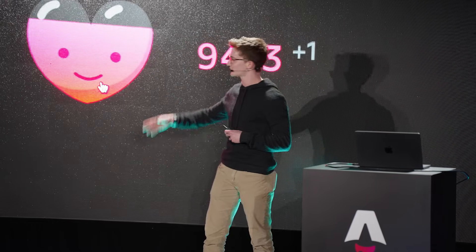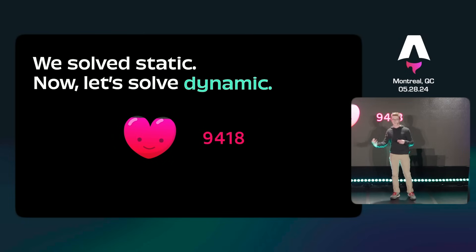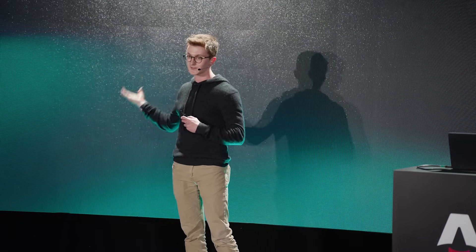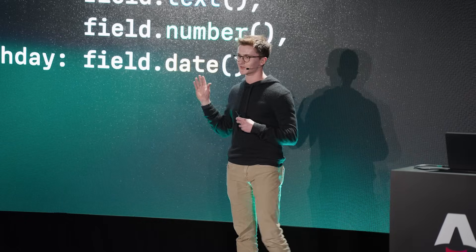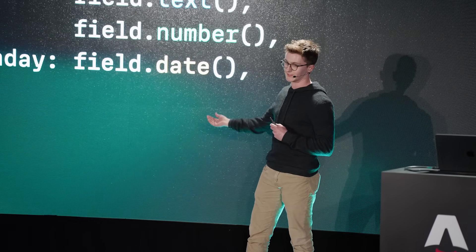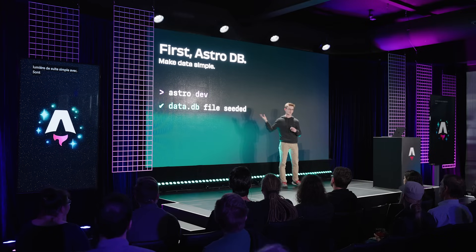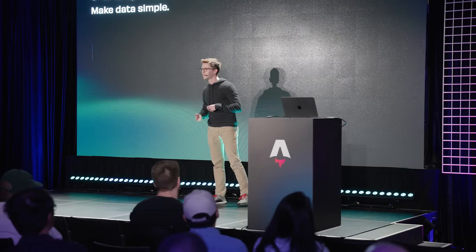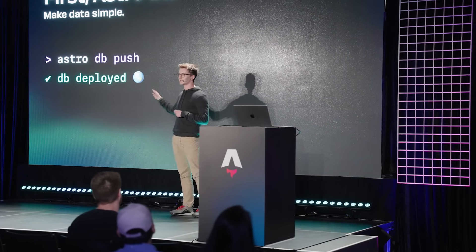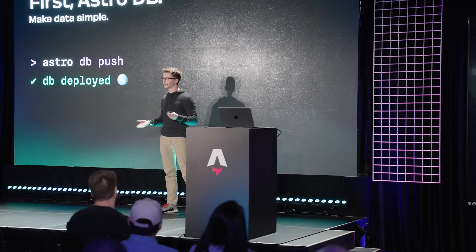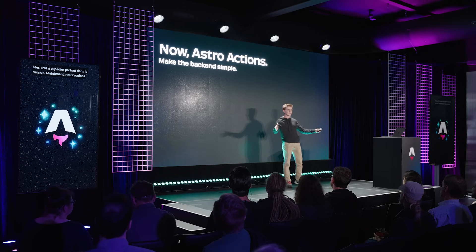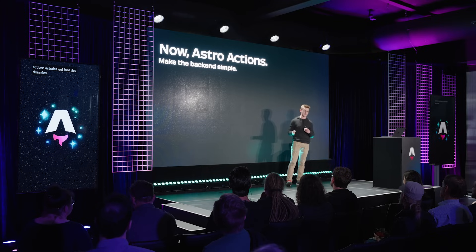But from here, it is time to talk about dynamic content. Because your website doesn't stop with static posts. You're making like buttons. You're making comment widgets. You're adding user authentication flows. And we wanted to help you on that part of the journey as well. We started with AstroDB, which makes data simple. You can scaffold out a simple SQLite database with our very easy DSL. Then you can start up your dev server, which creates a local database file — no need for API keys. You can play around with it however you like. And when you're ready to push up to production, run db push. We have migrations built in, and you're ready to ship anywhere in the world.